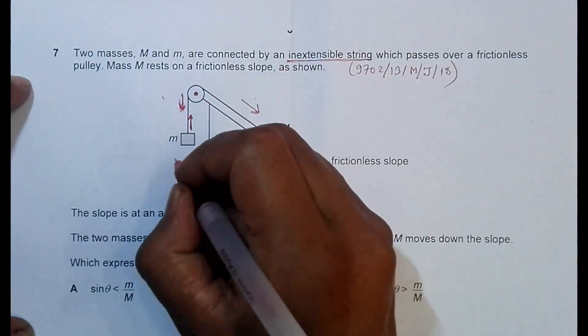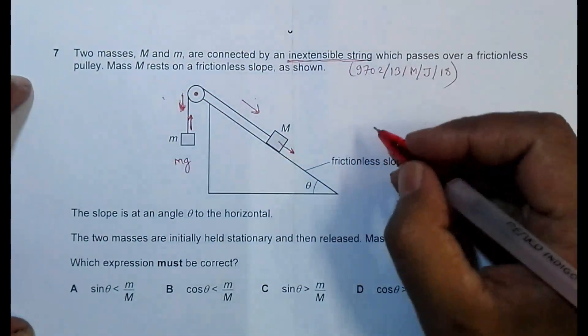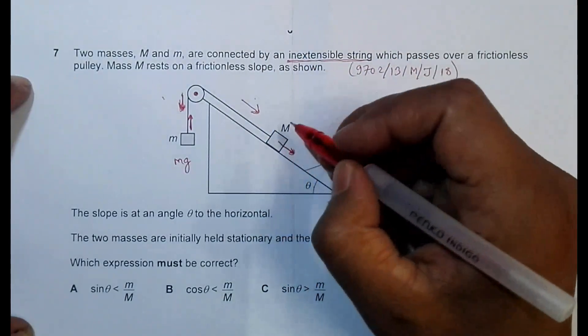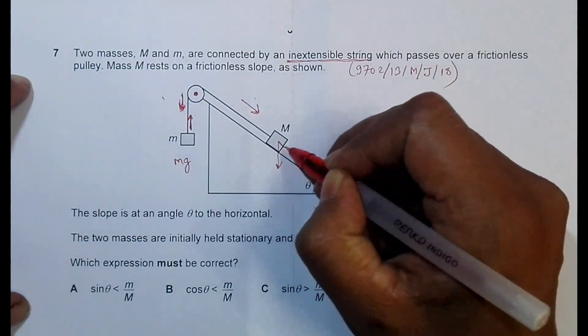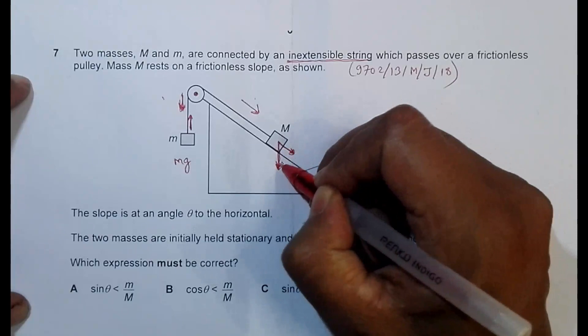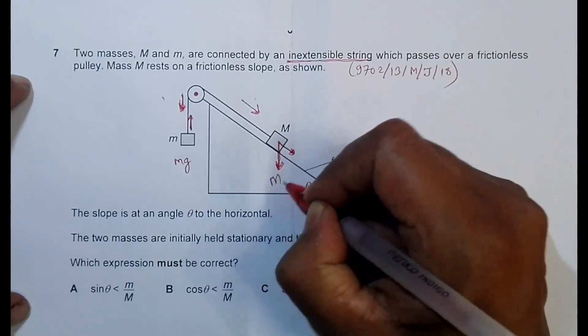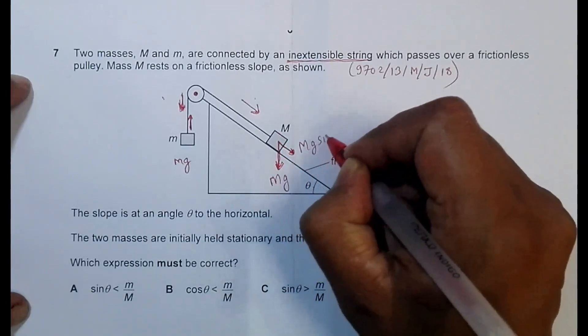Now this force is equal to its weight M into G. And this force is equal to the component of the weight of the body in this direction. And the weight here is MG. And the component here is equal to MG sine of theta.